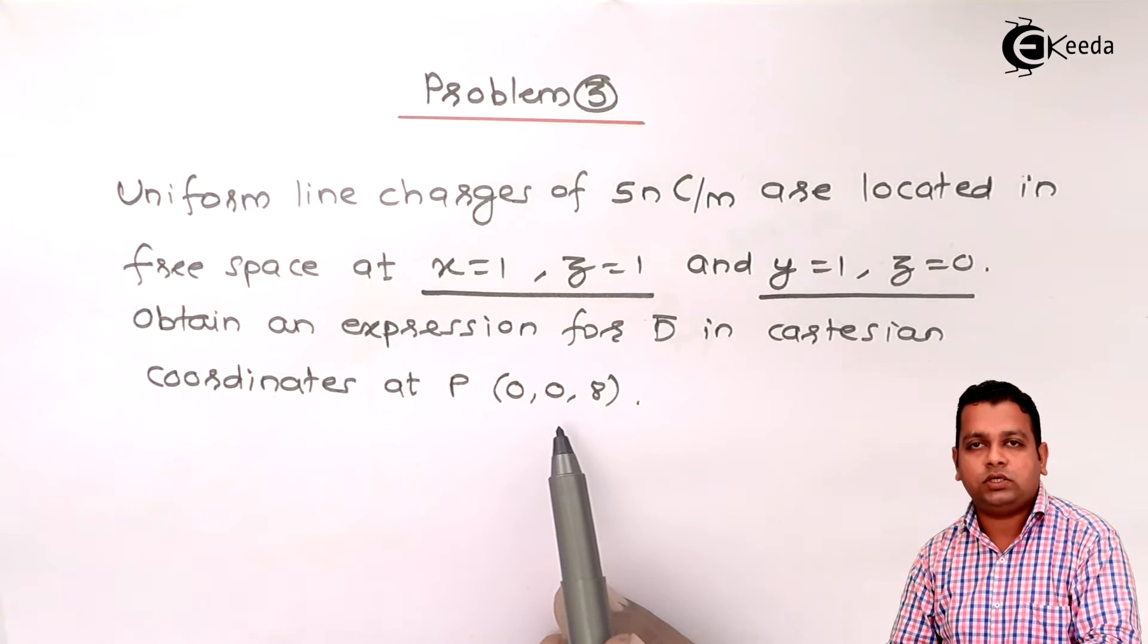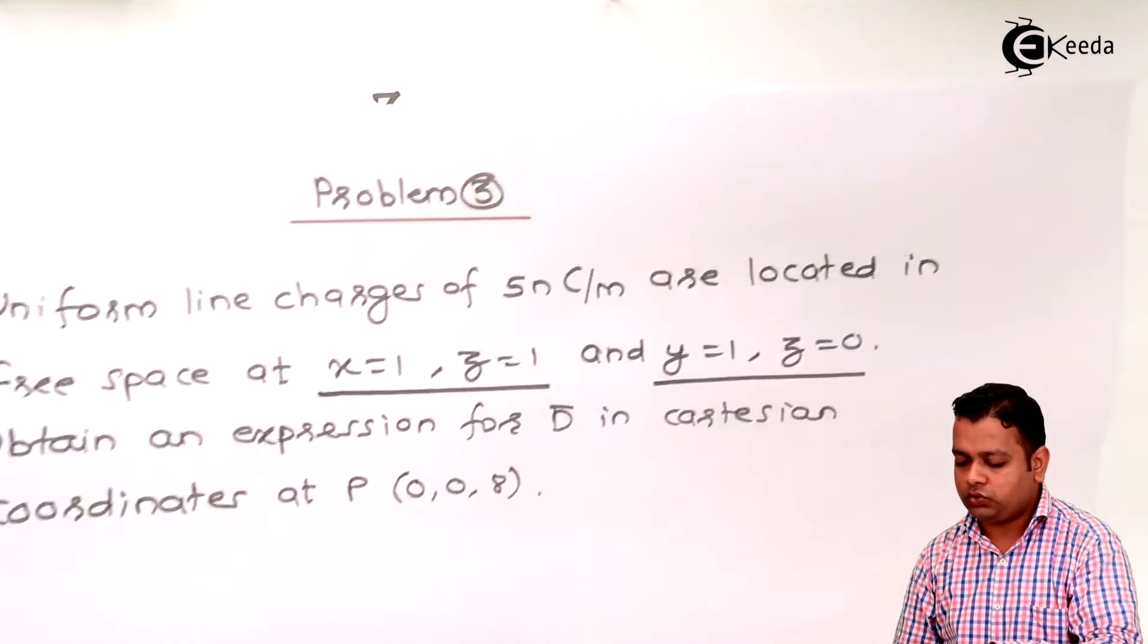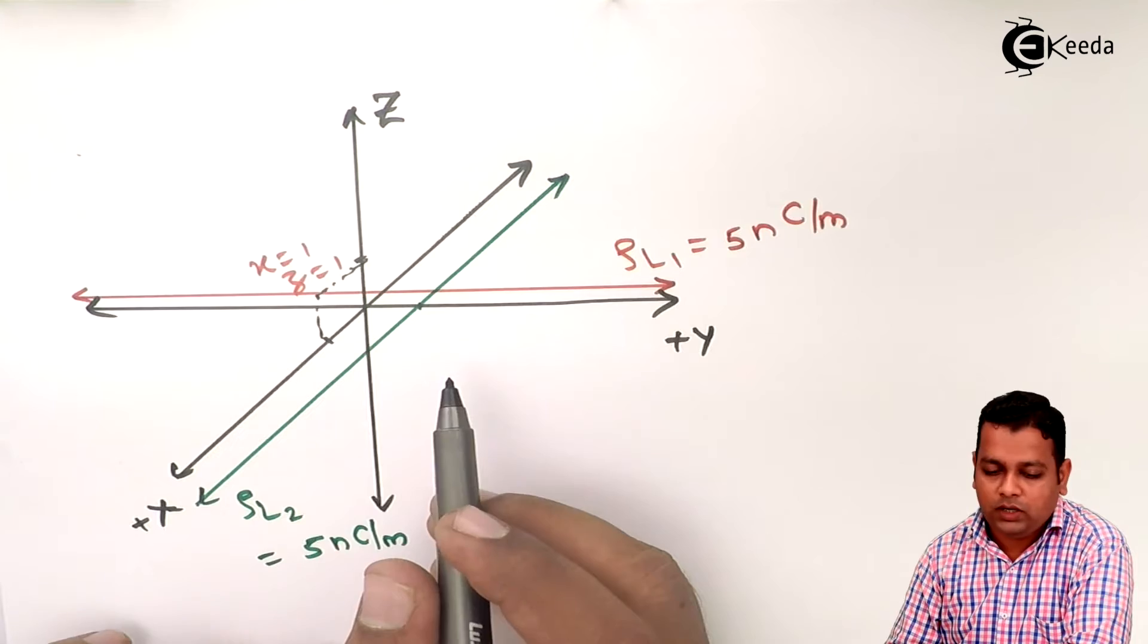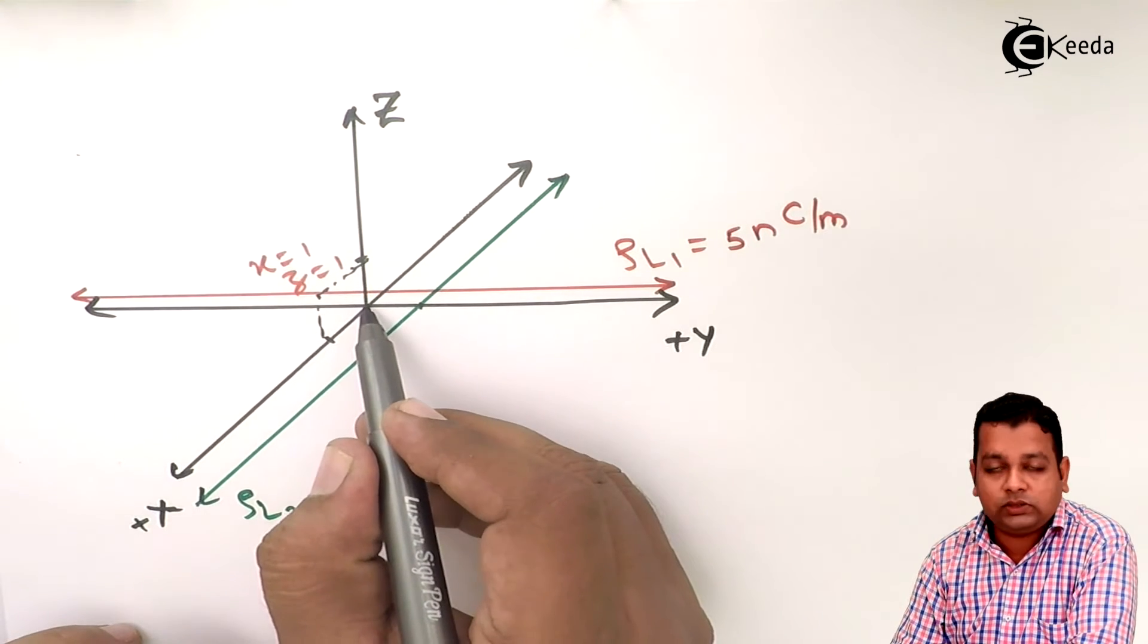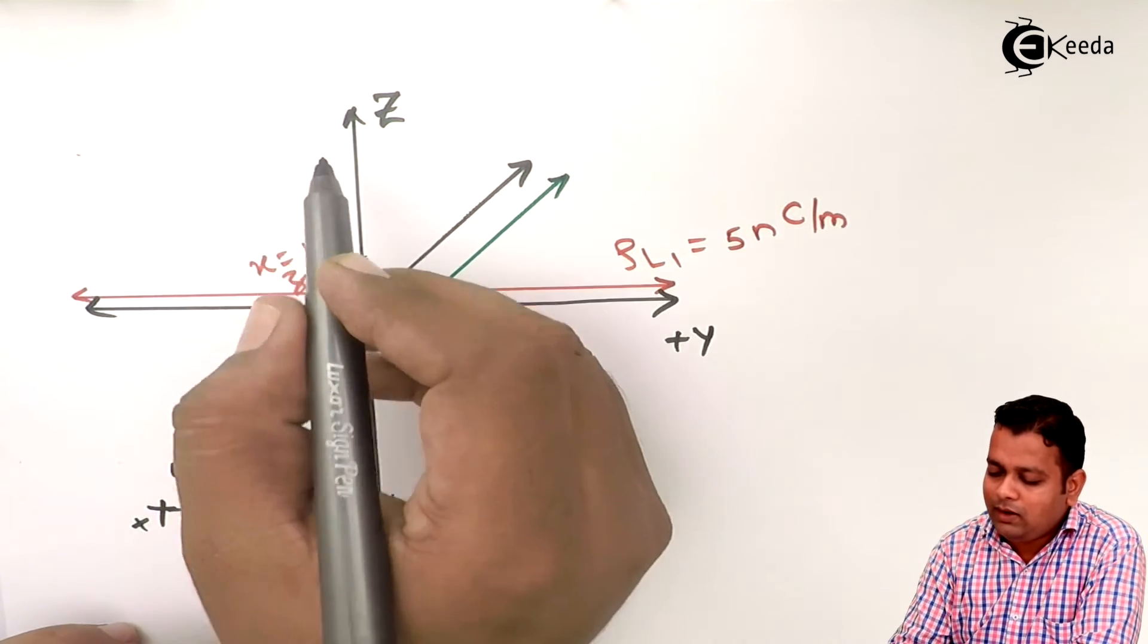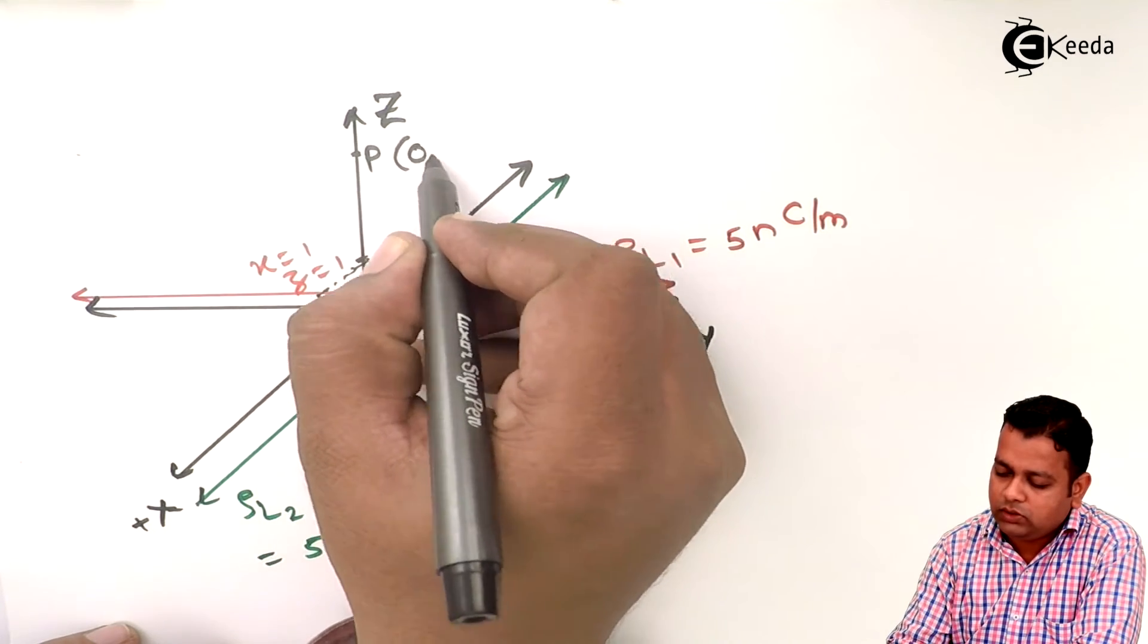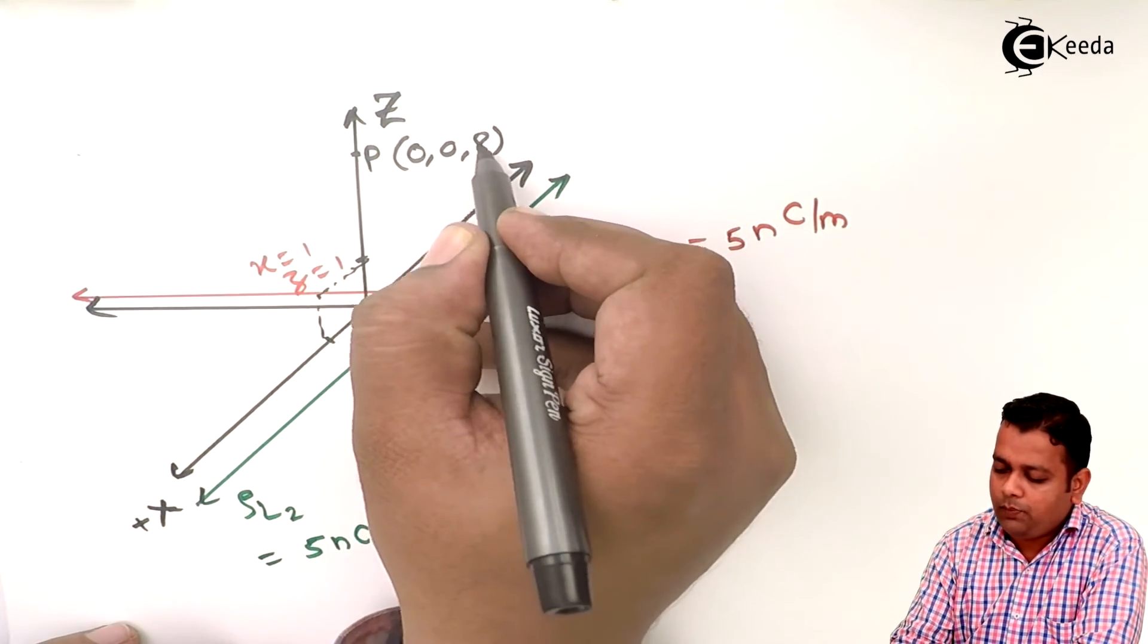And now we are asked to obtain the expression for D bar in Cartesian coordinates at point T having the coordinate values 0, 0, 8. So in the diagram I have to show the point T, it will be acting as the field point. So 0 units on x, 0 units on y, and 8 units somewhere here, this will be the point T, 0, 0, 8, a field point.